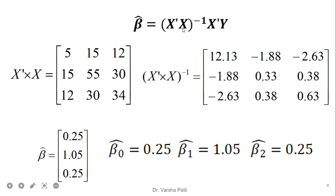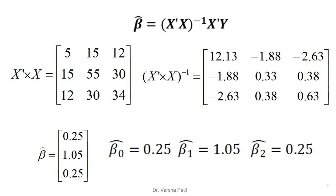The inverse of x-dash x is computed. First we multiply x-dash and x, then we take the inverse, and after that we multiply the inverse with the transpose of x, and again that resultant with y. In this way we get beta cap, which is a column matrix with three rows corresponding to beta 0, beta 1, and beta 2.